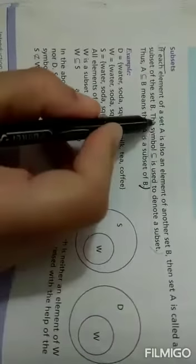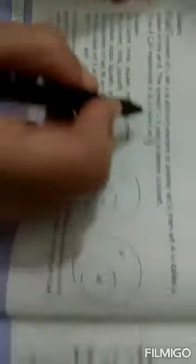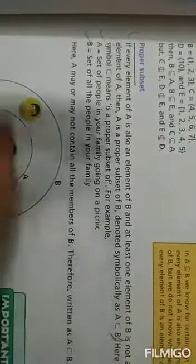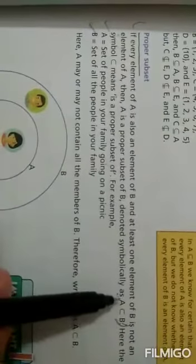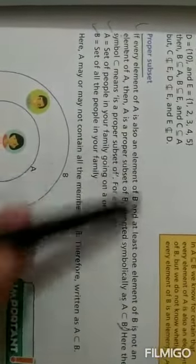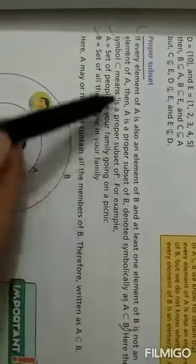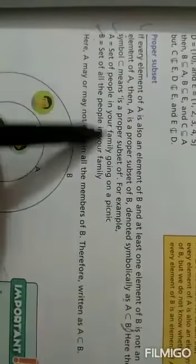This means that if each element of A is also an element of B, then A is the proper subset of B, denoted symbolically as this. It means that if A is an element of B, then B has at least one element not in A. This means that if A is a set of all the people in your family.